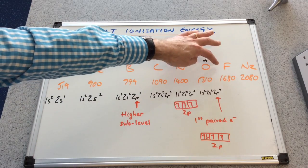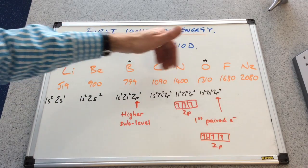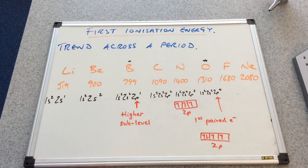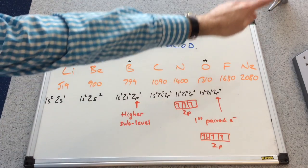And then once you get back up to fluorine, you've got the extra proton in the nucleus, that drop in atomic radius again. And the trend picks up again.